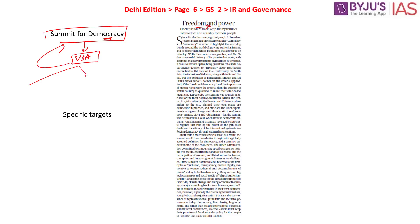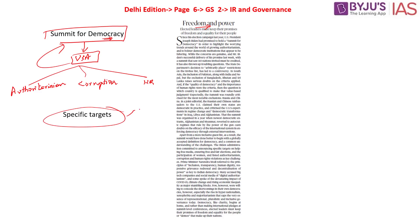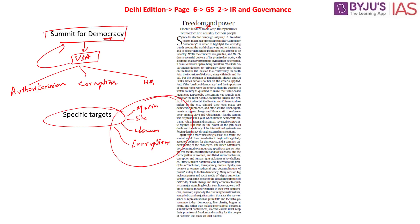The summit had three broad themes: first, it was against authoritarianism; second, it wanted to fight corruption; and third, it wanted to advance respect for human rights. Under the Biden administration, the US committed to specific targets — media rights, free and fair elections, participation of women, and addressing corruption as a threat to democracy — promising tools and information to advance these areas.